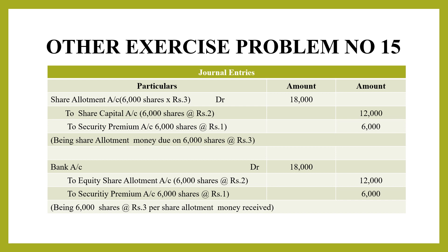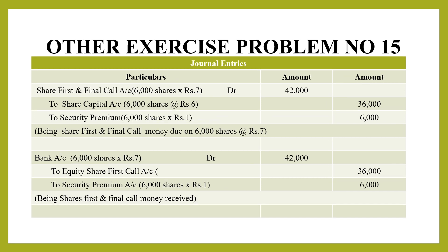Next is the Share First and Final Call entry. The final call collects 7 rupees — 6 rupees is the call amount and 1 rupee goes to Share Premium. Share First and Final Call Account is debited, then on receipt, Bank Account is debited to Share Final Call Account and Security Premium Account. The total values are 36,000 and 6,000, making 42,000 rupees. That completes all journal entries for this problem.